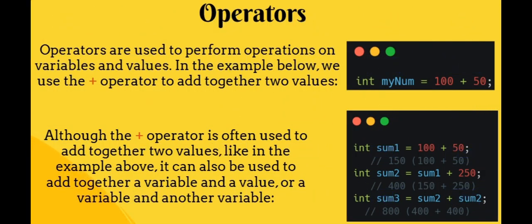Now guys let's talk about the operators. Operators are used to perform operations on variables and values. In the example below, we use the plus operator to add together two values. In the first example, I need to calculate the sum between 100 and 50. Although the plus operator is often used to add together two values, it can also be used to add together a variable and a value, or a variable and another variable.